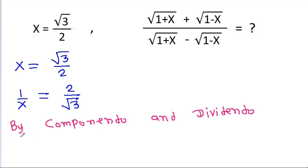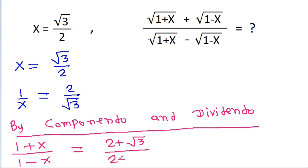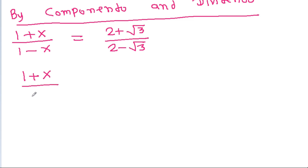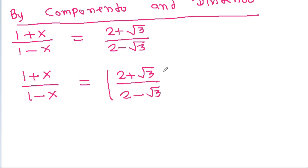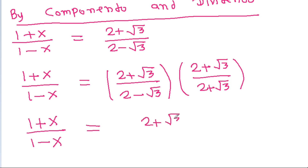By componendo and dividendo, we get (1 plus x) by (1 minus x) is equal to (2 plus root 3) by (2 minus root 3). And it is (1 plus x) by (1 minus x) is equal to (2 plus root 3) by (2 minus root 3). If we multiply it with (2 plus root 3) by (2 plus root 3), then we get (2 plus root 3) squared divided by (a minus b)(a plus b) which is a squared minus b squared.